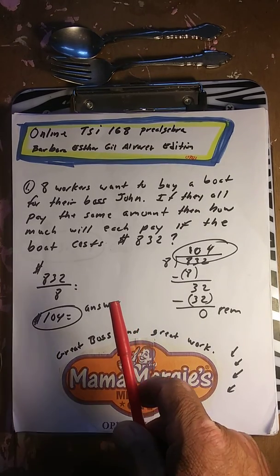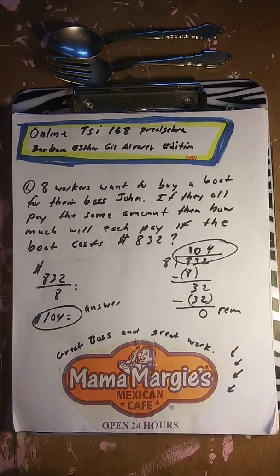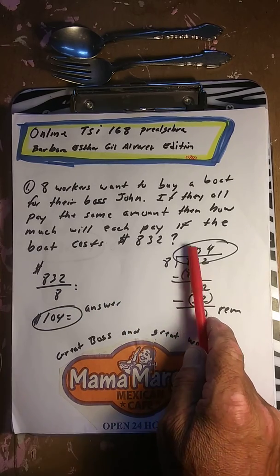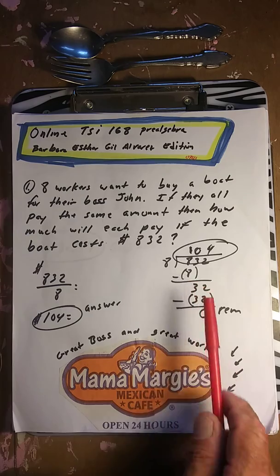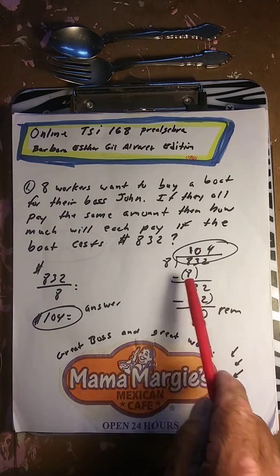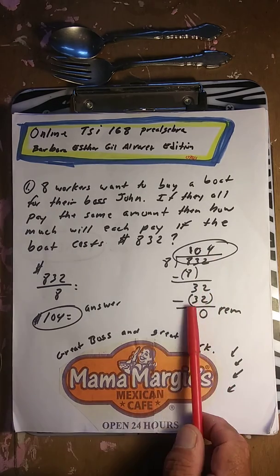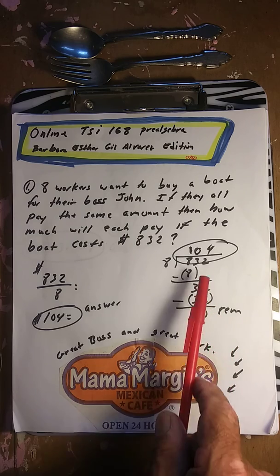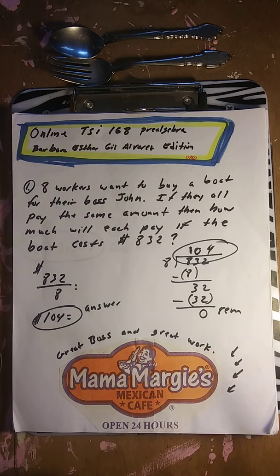To do this problem, we're going to have to divide eight into 832. Eight goes into 8 once, bring down the 3 — zero — bring down the 2, eight times 4 is 32, remainder zero. So each worker must pay $104.